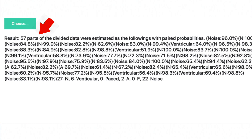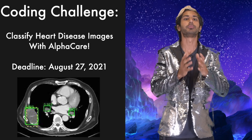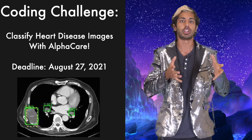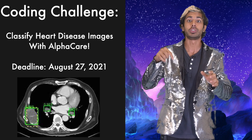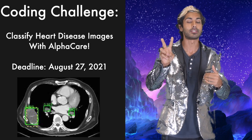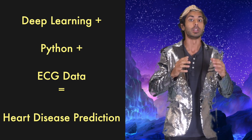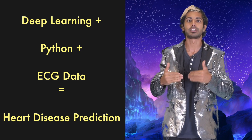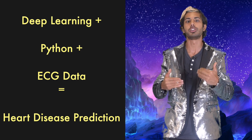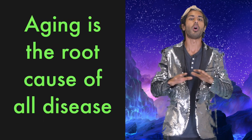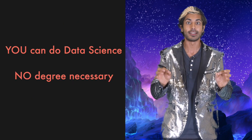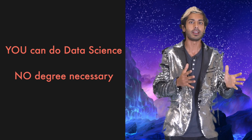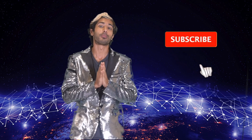Once we test it out, we can see results on a web page. This week's coding challenge is to develop your own project that uses AlphaCare for medical imaging classification. Post a classified medical image on any social media platform with the hashtag AlphaCare and submit it using the link in the video description. I'll announce the winner in two weeks. There are three things to remember from this video: one, we can use deep learning with Python on ECG data to predict heartbeat irregularities to aid cardiologists during mission-critical surgery; two, aging is the root cause of all disease, and with enough data, we can slow down and someday reverse the biological clock; and three, anyone can do data science — no degrees necessary with the freely available data, compute, and algorithms on the web. Please subscribe for more programming videos, and I've got to secure immortality. Thanks for watching.